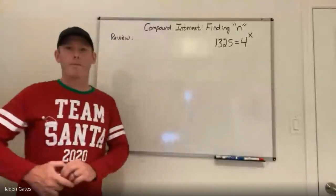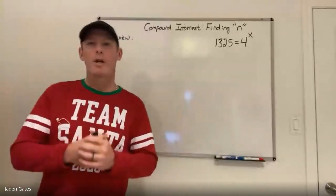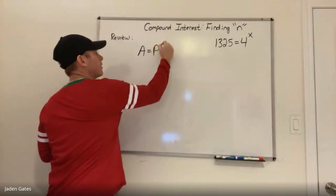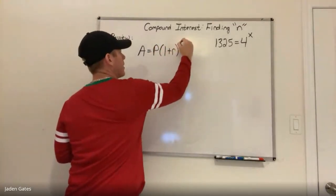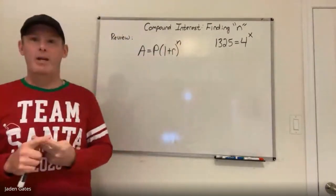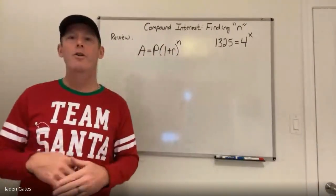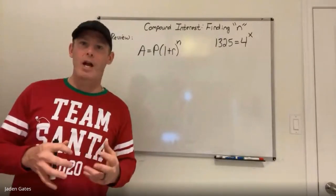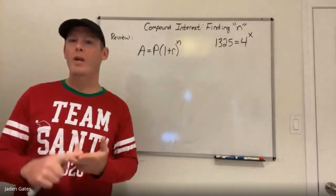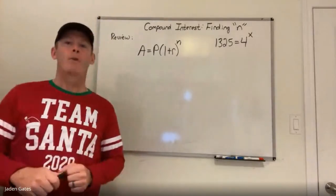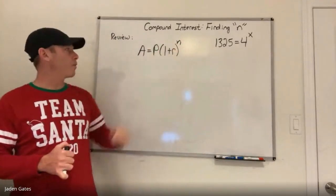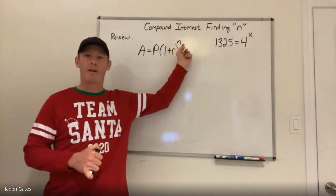Today we're going to be looking at compound interest again. Here's our formula: A = P(1 + r)^n. Last time we solved for A and P when the annual interest rate was compounded annually, and then we looked at other compounding periods — monthly, weekly, daily, quarterly, semi-annually. We always solved for A and P and always knew r and n. Now today we're going to be solving for n.